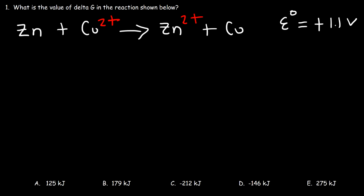In this video we're going to work on some problems that relate cell potential and Gibbs free energy together. So let's start with this problem: what is the value of delta G, or Gibbs free energy, in a reaction shown below? The formula that you need is this equation: delta G naught is equal to negative n times Faraday's constant times the cell potential.